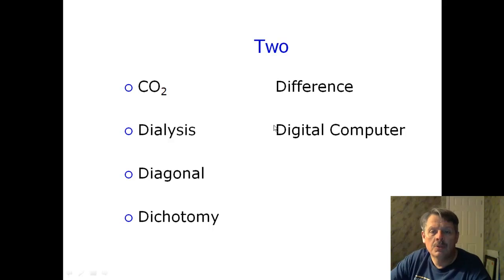Two. If you look at all of these, they all start with DI. Even if you look at the chemical compound, that's carbon dioxide, which means two. Dialysis is something that you do if your kidney fails, and you're separating your blood into two pieces, the good part and the bad. Diagonal, you are separating a square into two pieces.